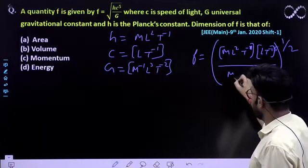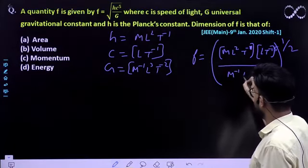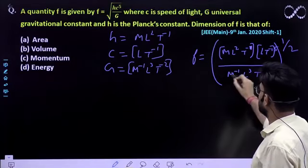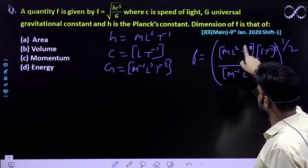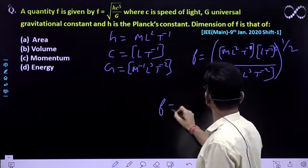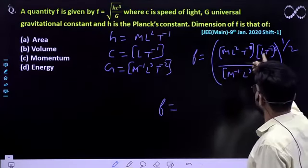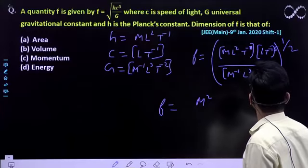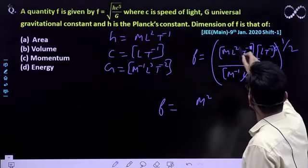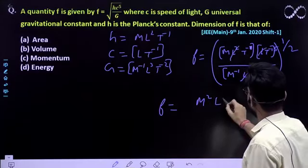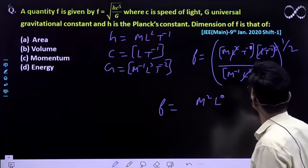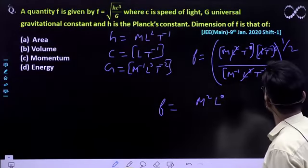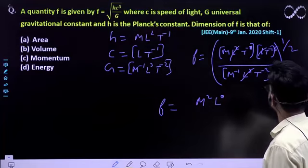Then G ki value: M⁻¹L³T⁻². Isko solve karo, pehle andar further solve karo. m is expression me nahi hai, sirf is expression me. m would go over there. So, you will be getting m². l ki value cut rahi hai. Dekho, l must be equal to 0. Nahi, nahi cut rahi.